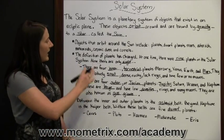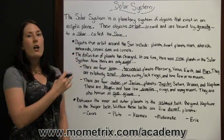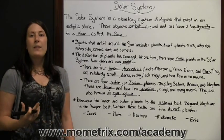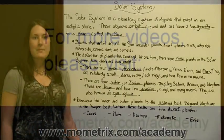Both the outer planets and the inner planets are all orbiting around the Sun, making up the solar system.